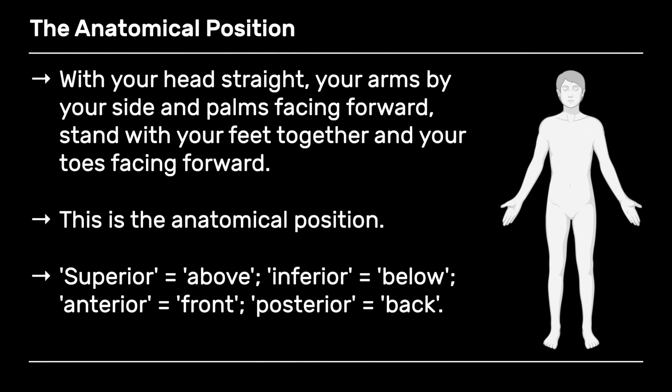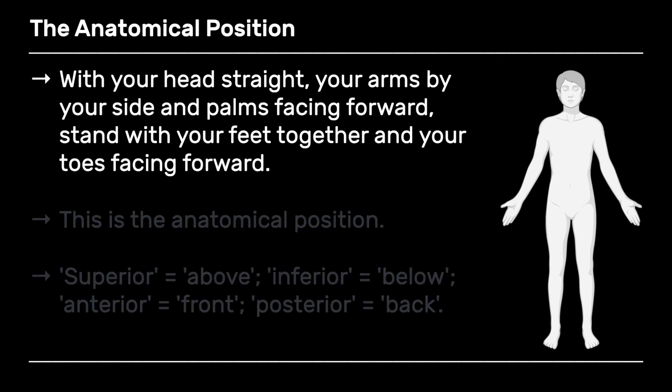When we think about anatomy, we have to think about the anatomical position, and this enables us to always come back to how the body is viewed. You can now undertake the anatomical position. Stand with your head facing straight, your eyes facing straight, put your arms down by your side with your palms facing forward, stand with your feet together, and your toes pointing forward. This is the anatomical position from which all other types of movement and terms are described.